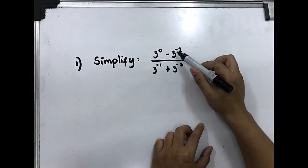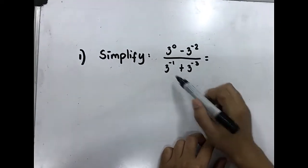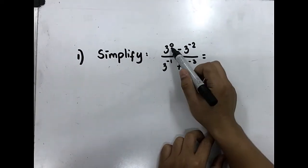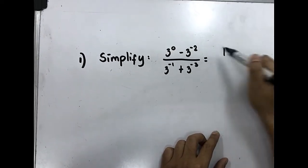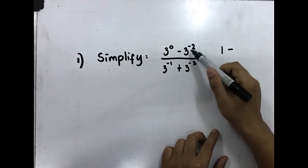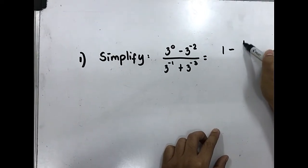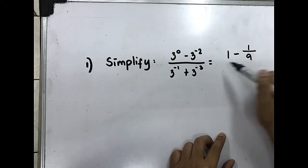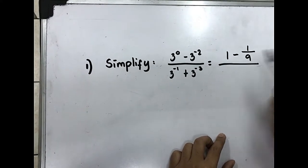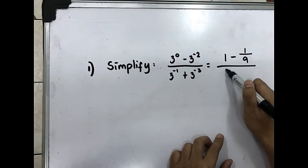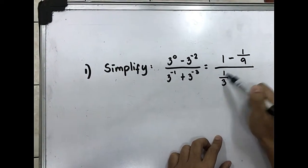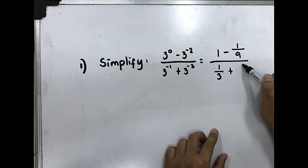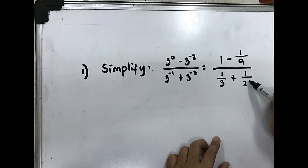Simplify 3 raised to 0 minus 3 raised to negative 2, all over 3 raised to negative 1 plus 3 raised to negative 3. 3 raised to 0 is equivalent to 1, minus 3 raised to negative 2, that is 1 over 3 squared, give you 9. All over 3 raised to negative 1, that is 1 over 3, plus 3 raised to negative 3, 1 over 3 cubed, 27.